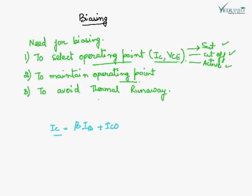The collector current IC is related to beta times IB, where beta is the current gain of the transistor and IB is the base current. This is due to majority charge carriers. If we consider the current due to minority charge carriers, it is ICO, which is the leakage current flowing in the reverse-biased junction. So IC is equal to beta·IB plus ICO.